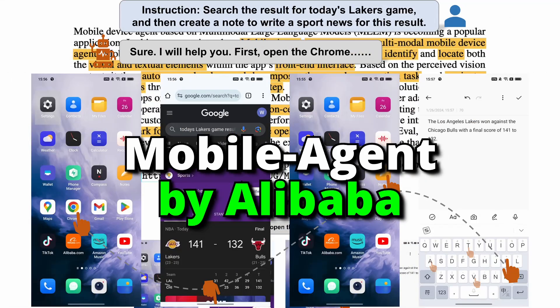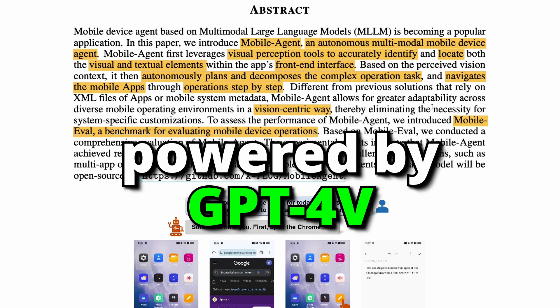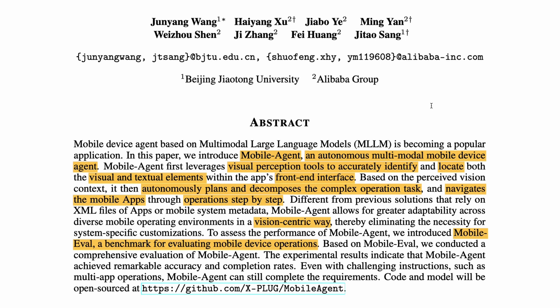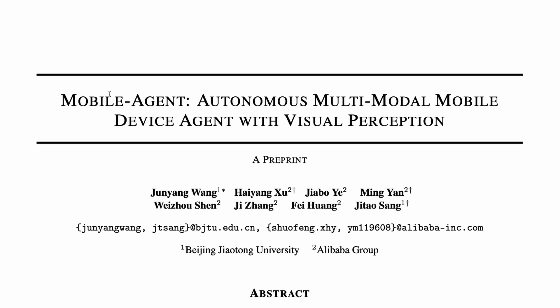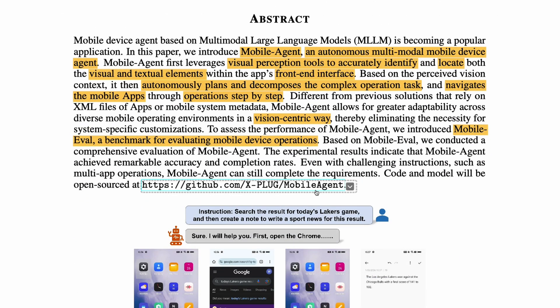This paper introduces Alibaba's Mobile Agent — an agent powered by GPT-4 Vision that can perform tasks on an Android operating system. The paper details how they built it and includes benchmarks. The paper title is 'Mobile Agent: Autonomous Multimodal Mobile Device Agent with Visual Perception.' They have also shared the model code, scripts, and everything else at a particular URL.